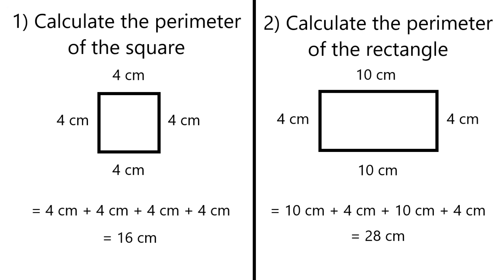You leave the unit of measure the same — so whether it be meters, millimeters, or wherever it might be — and you just add the numbers together. That's pretty much just the basic principle of how to find the perimeter.